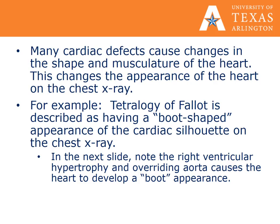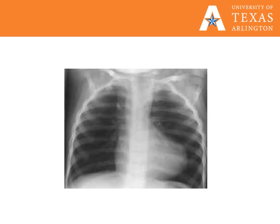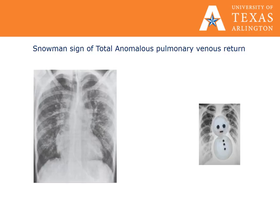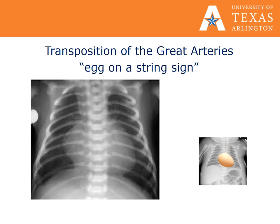Many cardiac defects can cause changes in the shape and musculature of the heart, and these changes can be apparent on chest X-ray. One example is tetralogy of Fallot — these patients are described as having a boot-shaped appearance of their cardiac silhouette. The snowman sign is seen with total anomalous pulmonary venous return. Transposition of the great arteries is described as an egg on a string on chest X-ray.